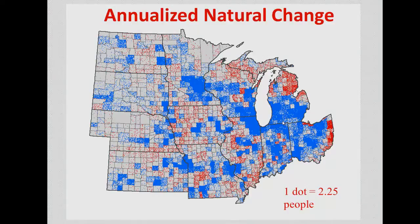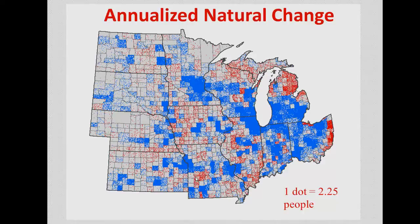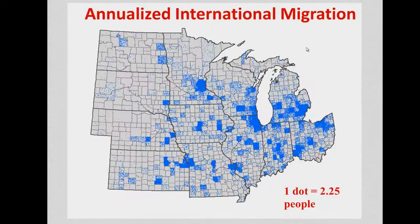This map shows the annualized value of change — one dot equals 2.25 persons. Here is Tama County. The natural change map — births minus deaths — shows that on an annualized basis, a large swath of Iowa and much of the Midwest, including southern Illinois and west-central Missouri, are realizing natural decline, where deaths exceed births.